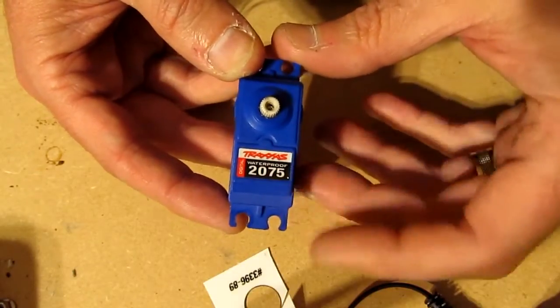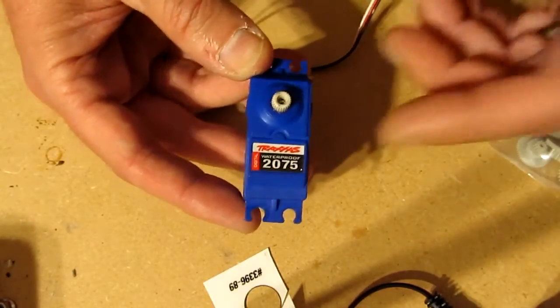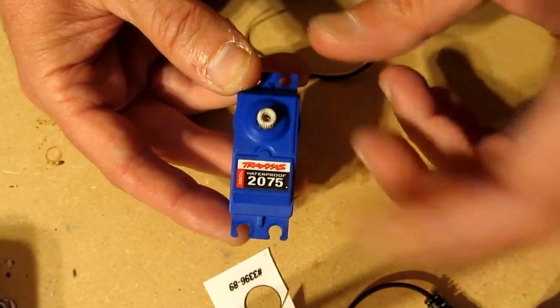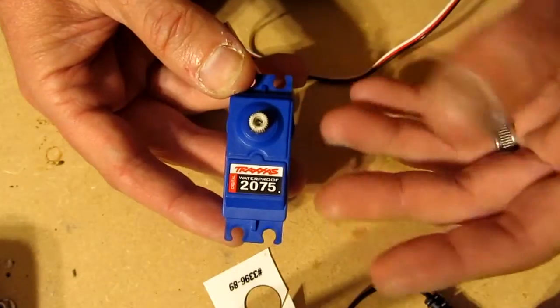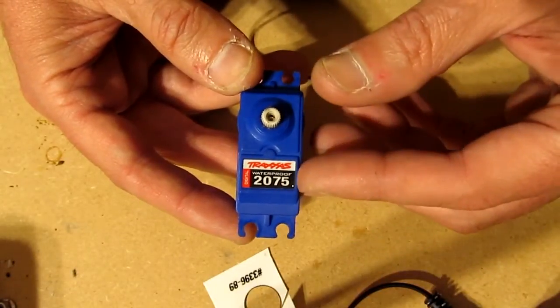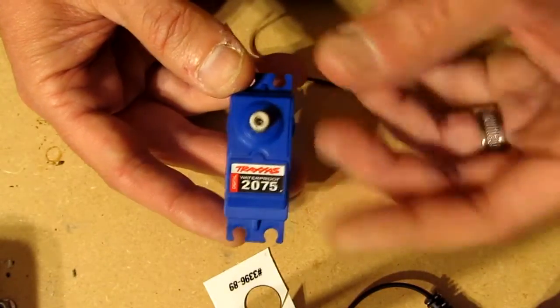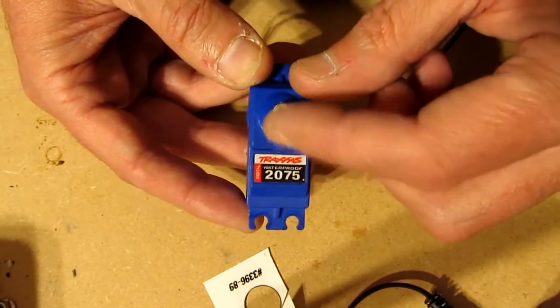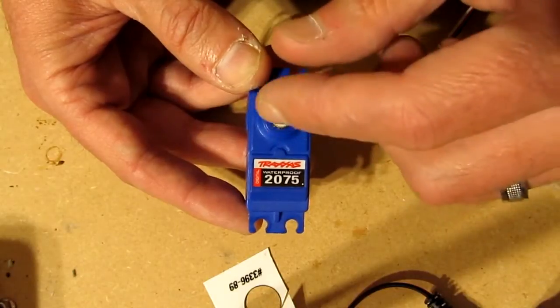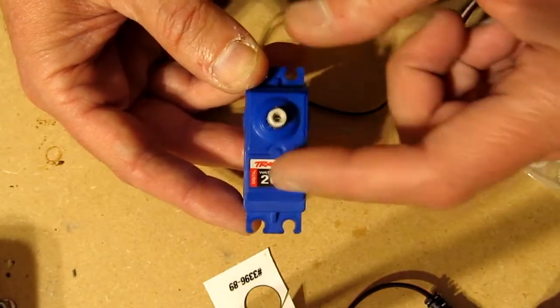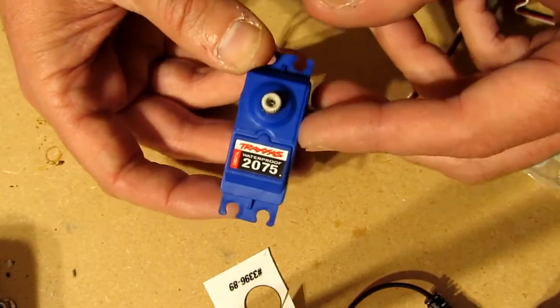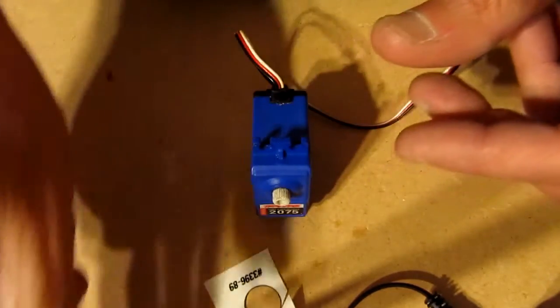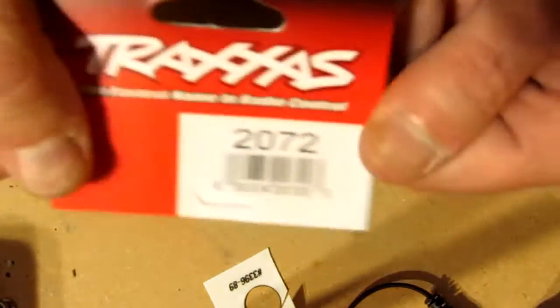I put it in a vehicle without a servo saver. Now the highlight of the 2075 is it has a lot of torque for such an inexpensive servo. It's about 35 bucks, it's waterproof, so for that price it's a great servo. The drawback is plastic, no servo saver. Any stress, you're gonna damage the gears.